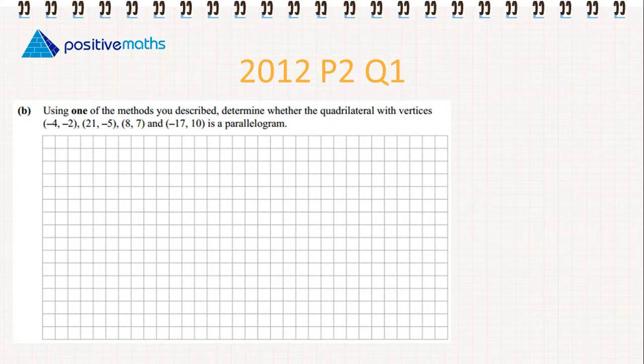Part B: using one of the methods we described, determine whether the quadrilateral with vertices (-4, -2), (21, -5), (8, 7), and (-17, 10) is a parallelogram.